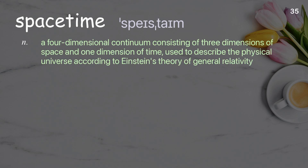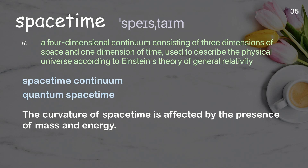Space-time: a four-dimensional continuum consisting of three dimensions of space and one dimension of time, used to describe the physical universe according to Einstein's theory of general relativity. Examples: spacetime continuum, quantum space-time. The curvature of space-time is affected by the presence of mass and energy.